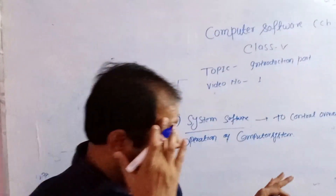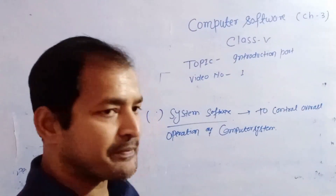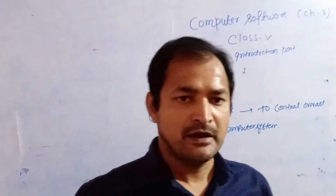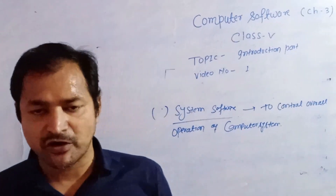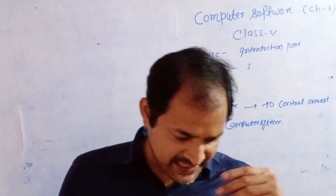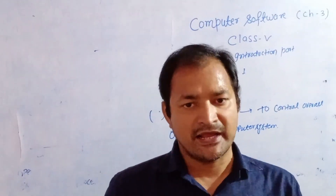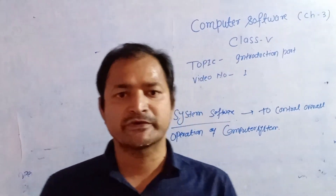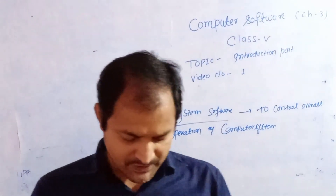There are three parts of system software. First, operating system software. Second, language processor. And third, utility software.